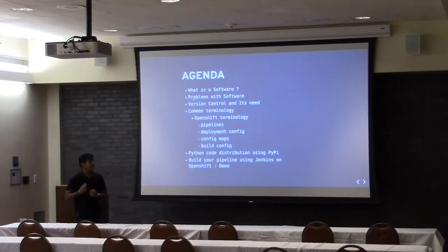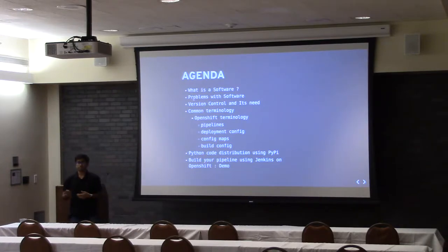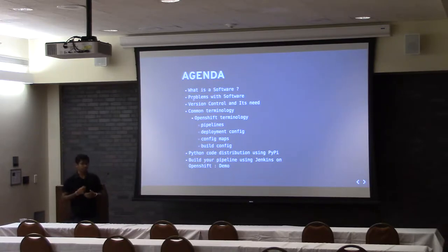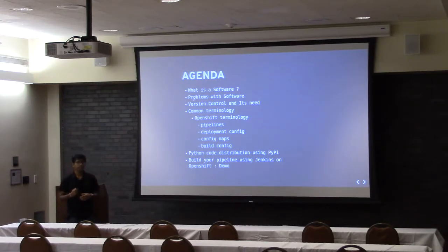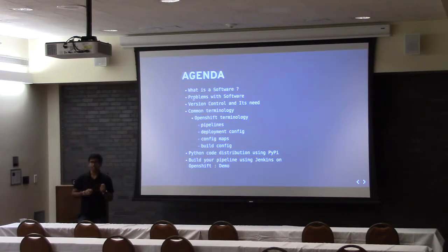We'll cover version control and its need, and common terminology when you start with CI pipelines — continuous integration, continuous delivery, etc. We'll also cover how we distribute code on PyPy, how to build your pipeline using Jenkins on OpenShift, followed by a small demo which is recorded for 20 minutes but I'll try to fast-forward it.